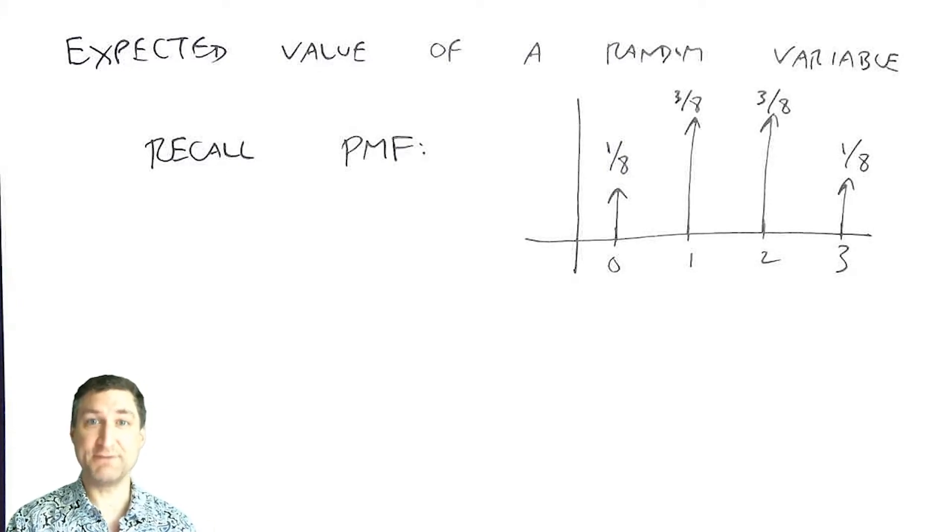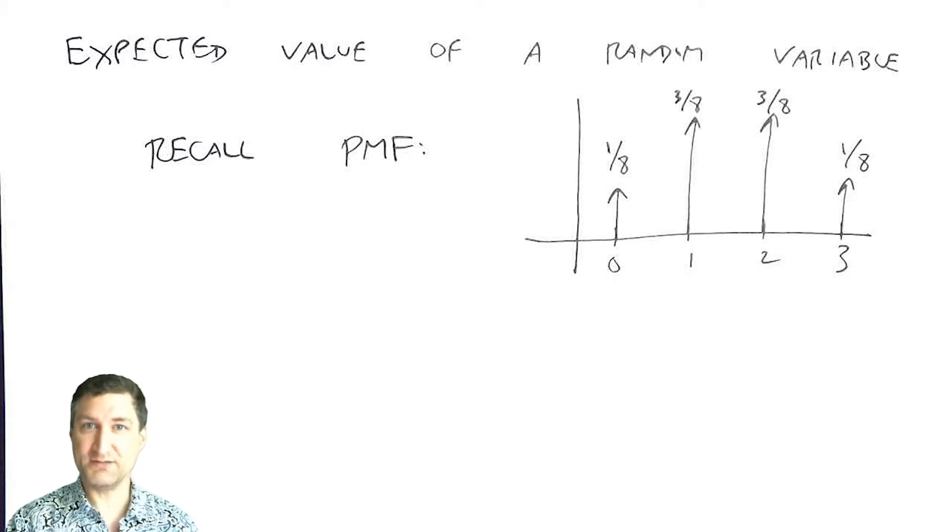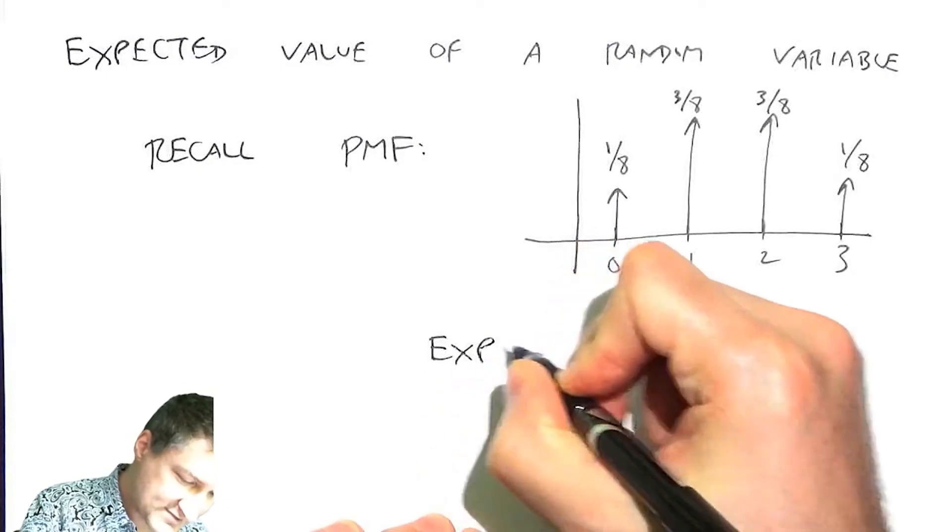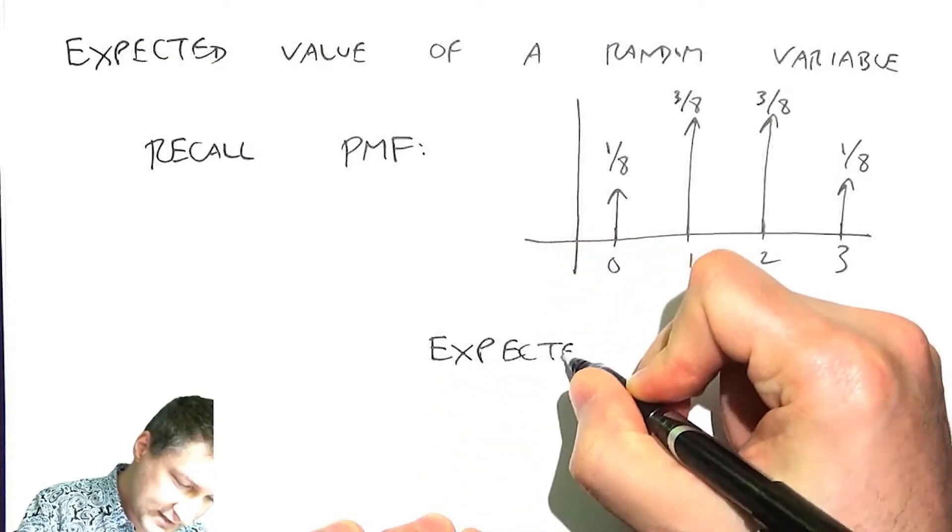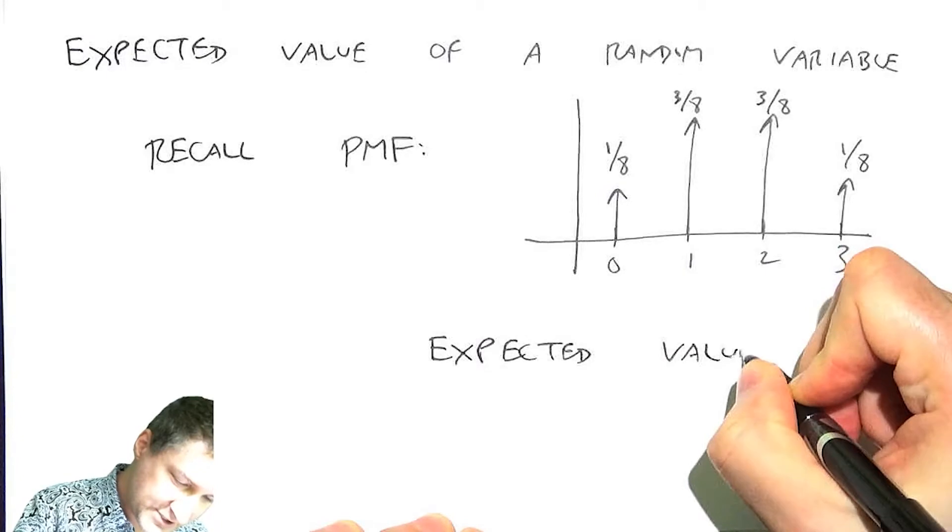And you may be familiar with the idea of taking the average of a bunch of numbers, that's basically what the expected value is. So the expected value is also kind of known as the mean, or the expectation. So you may see these things used interchangeably.